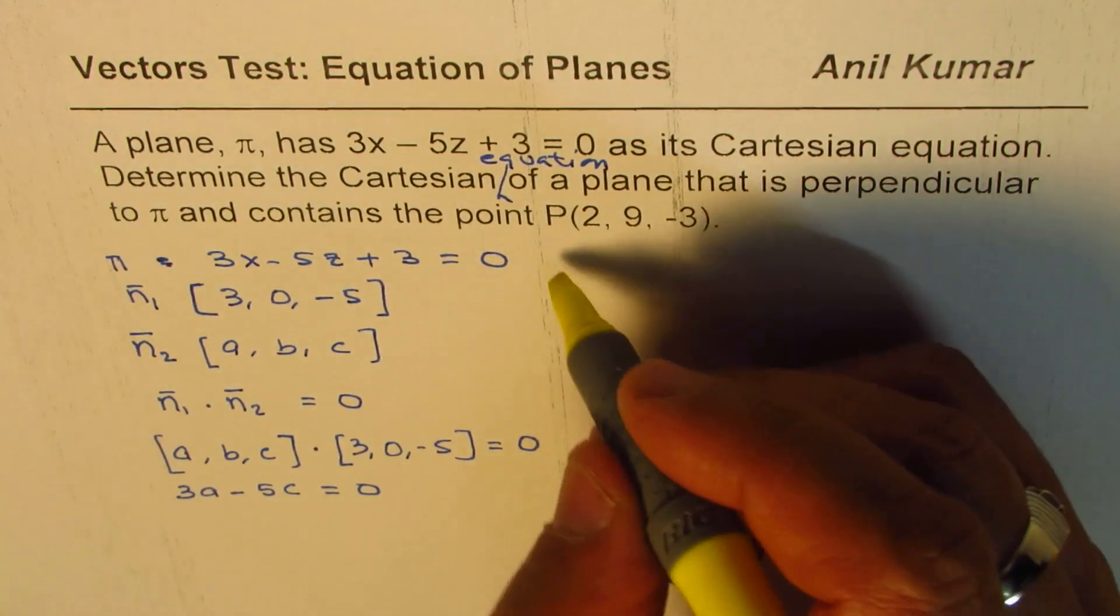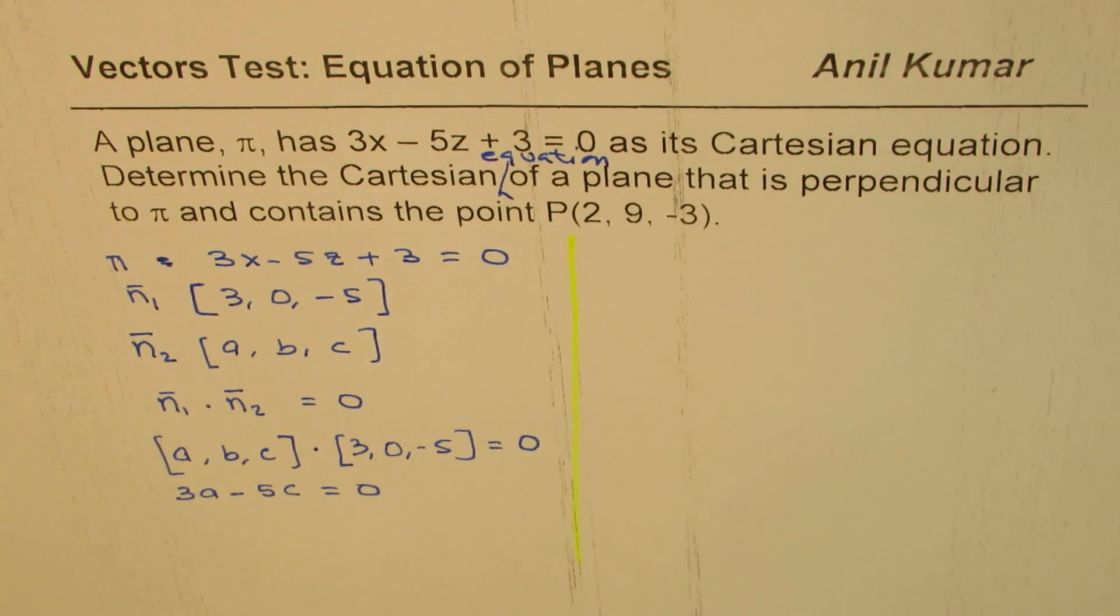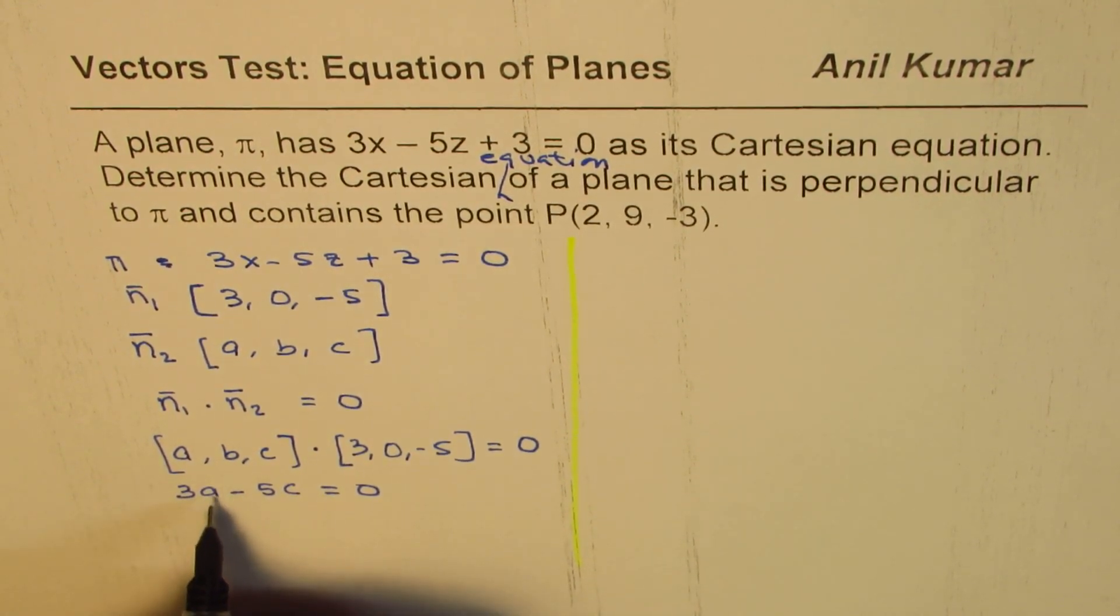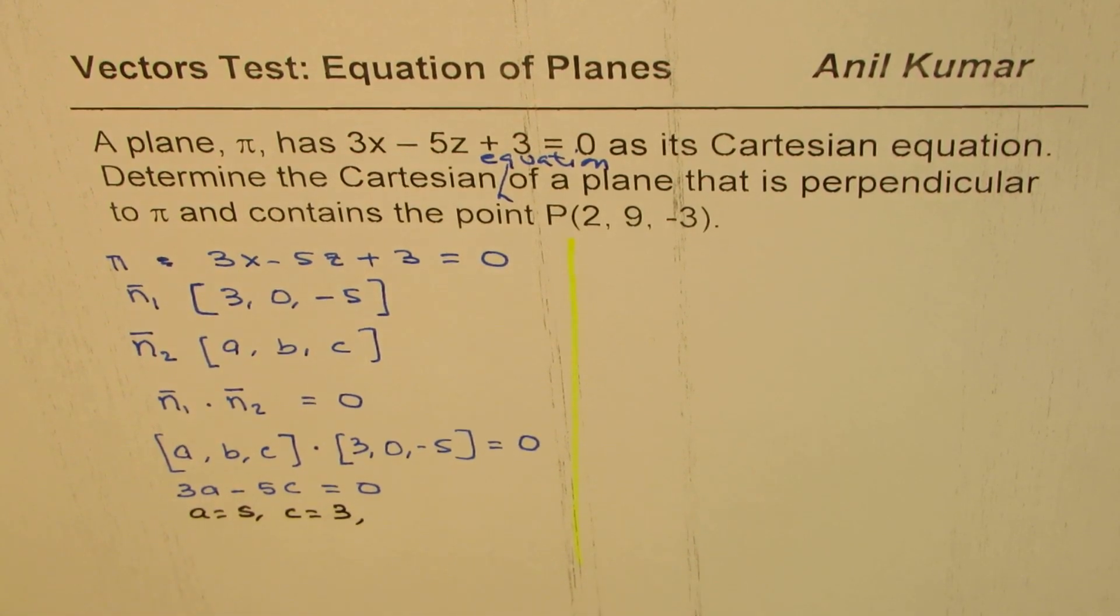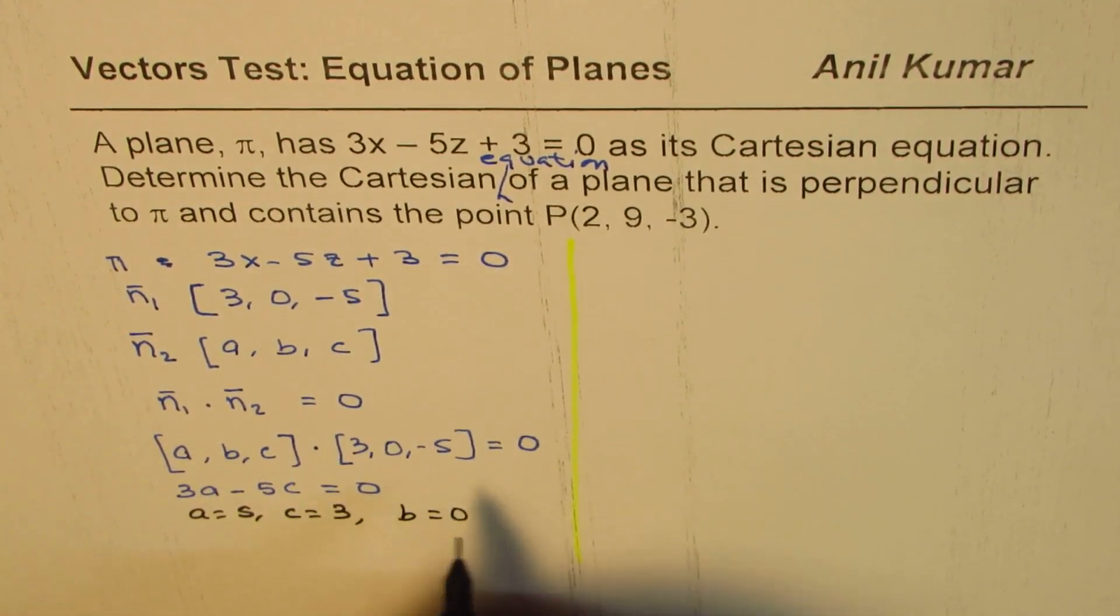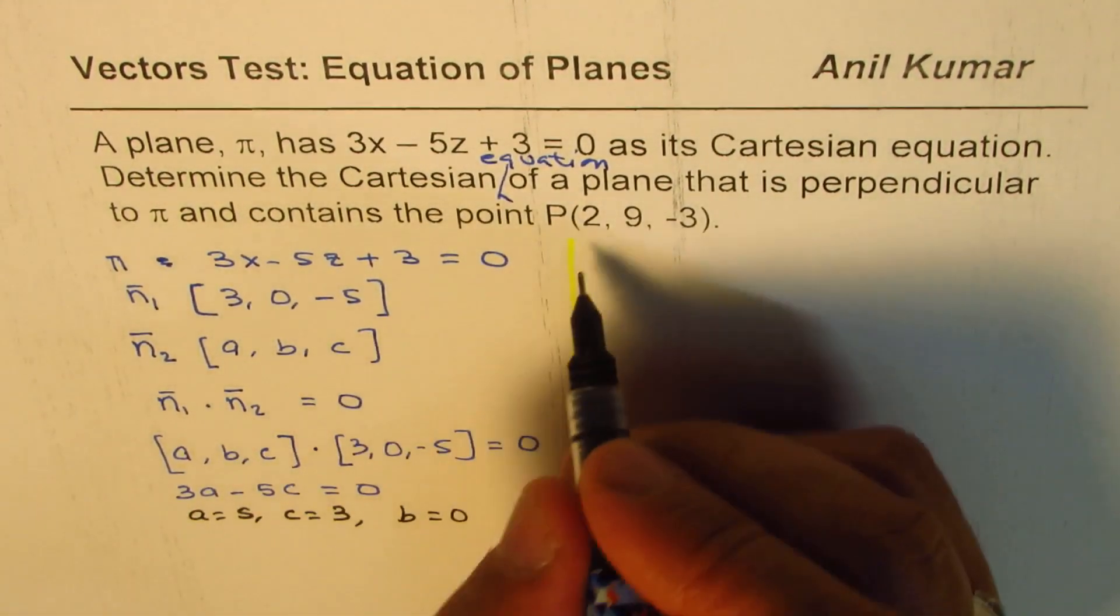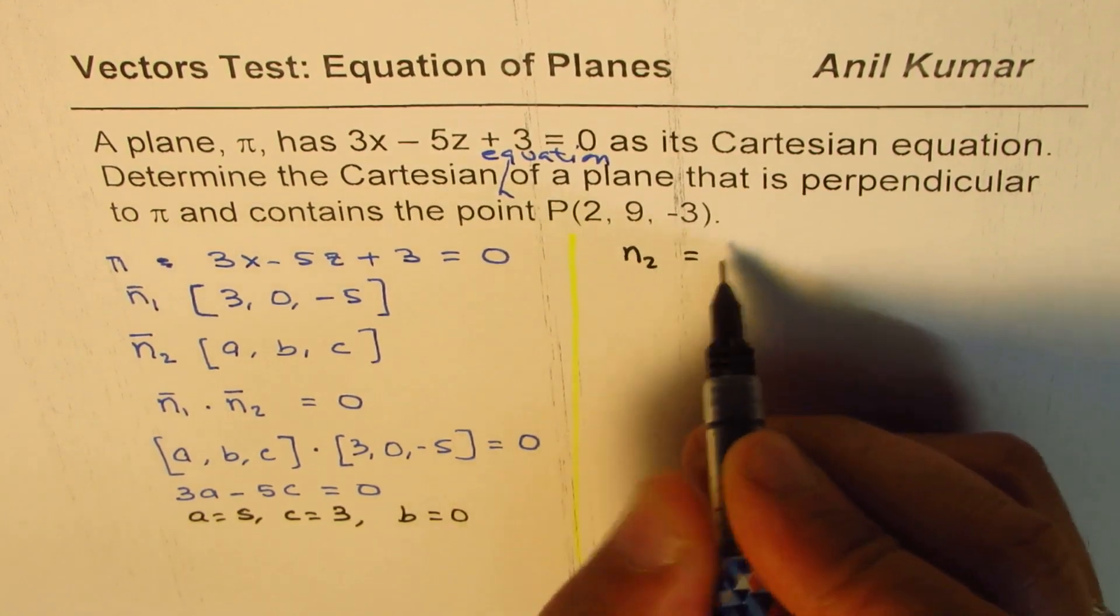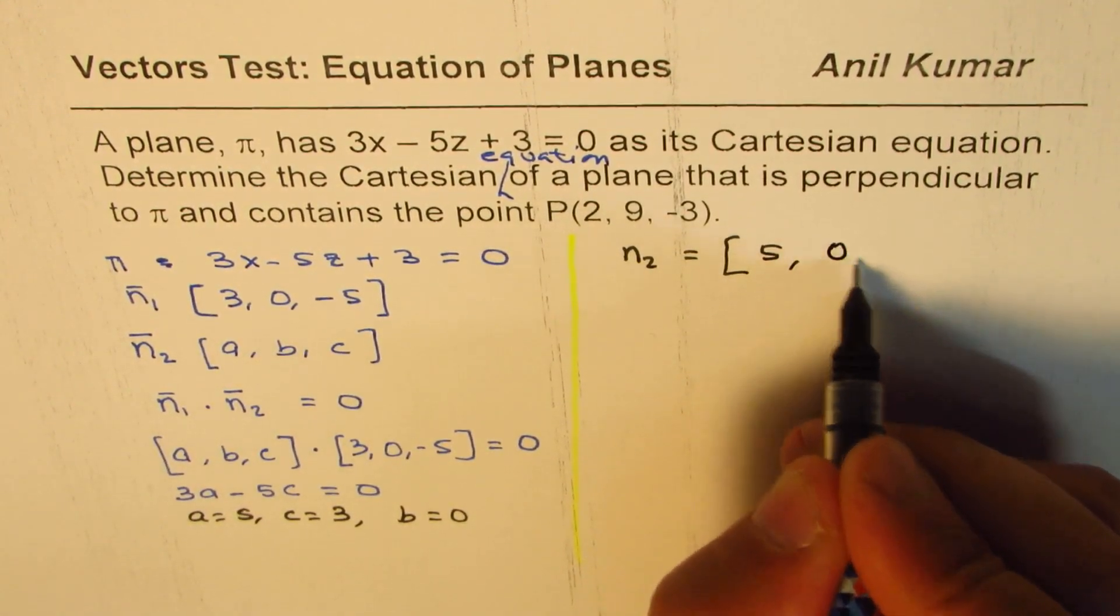From here you can find possible values of a and c. You're actually free to choose those values. The best choice could be if you take a = 5 and c = 3. And b we can always take as zero, so that could be the normal.